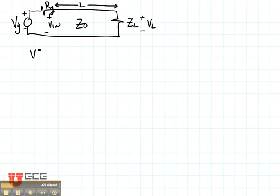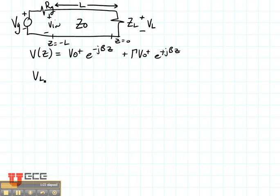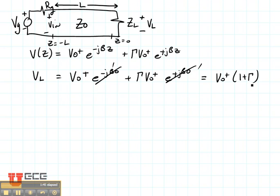But let's find them. We're going to always go back to just our standard voltage equation: V0 plus E to the minus J beta Z plus gamma V0 plus E to the plus J beta Z. Right here is Z equals 0 and right there is Z equals minus L. So for VL we're just going to substitute in here 0 for our Z. So it's V0 plus E to the minus J beta 0, which is 1, plus gamma times V0 plus E to the plus J beta 0, which again is 1. So this is going to be V0 plus times 1 plus the complex reflection coefficient. Now that's great except we don't know V0 yet.